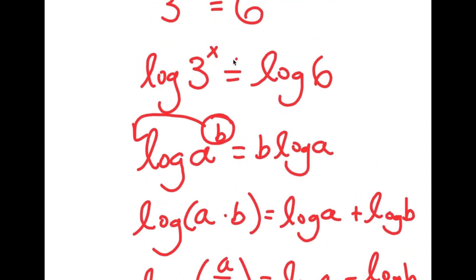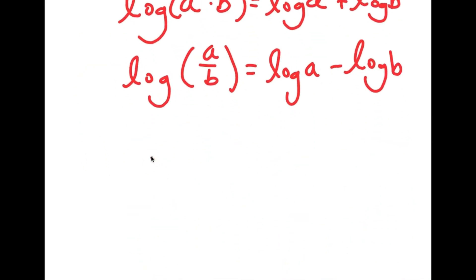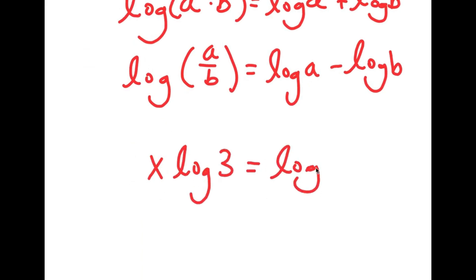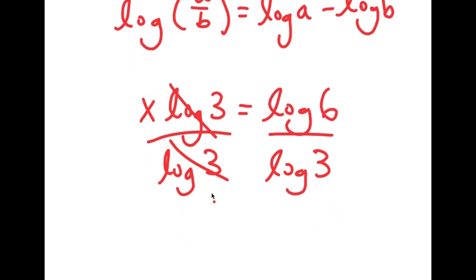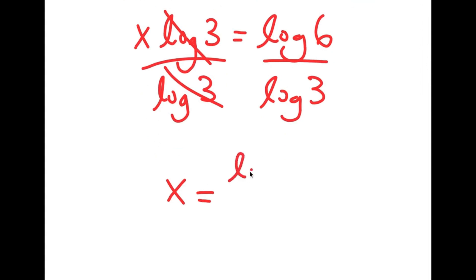We have log 3 to the power of x equals log 6, and we can use our first property: log a to the power of b equals b times log a. So I can move x to the front and get x times log 3 is equal to log 6. From here, we want to isolate x, so I divide both sides by log 3. These two cancel out and I get x is equal to log 6 over log 3.